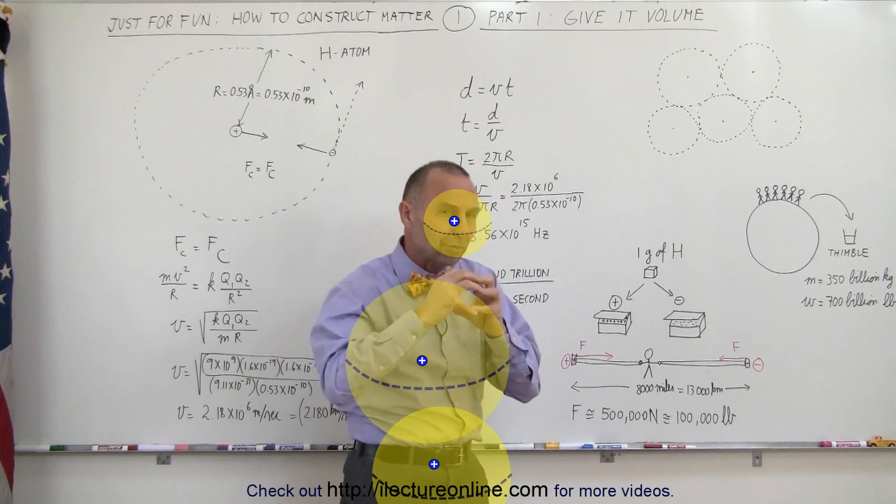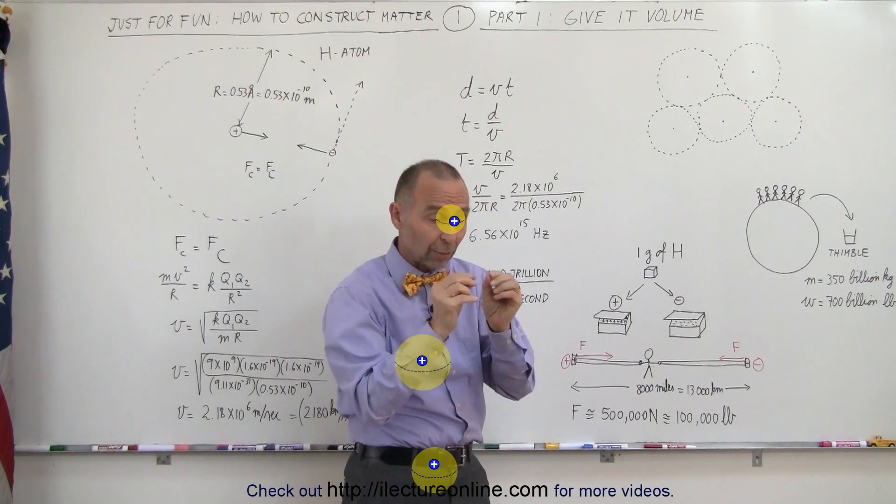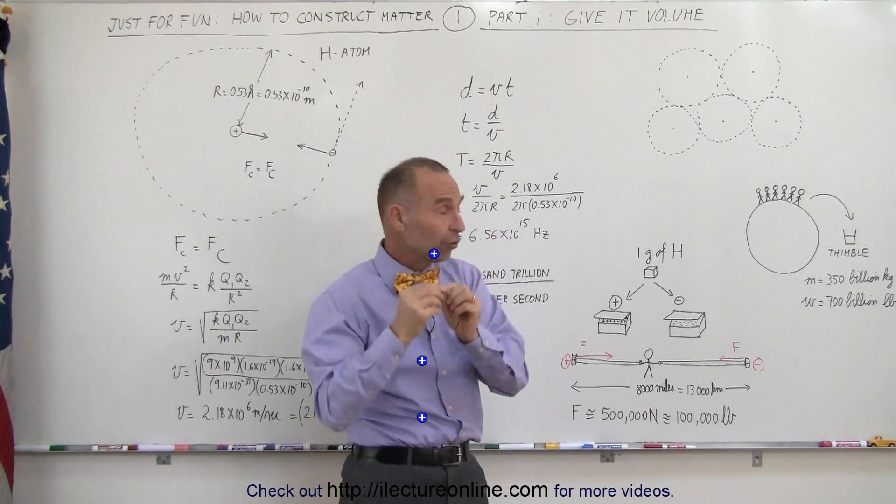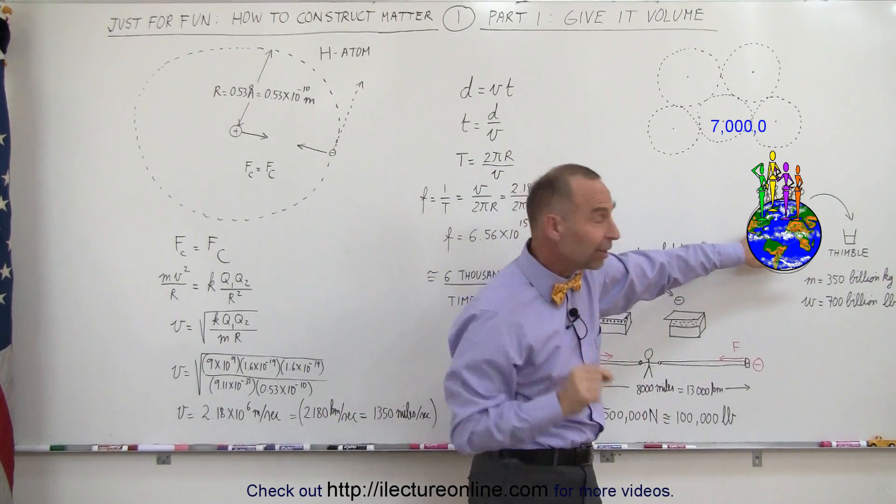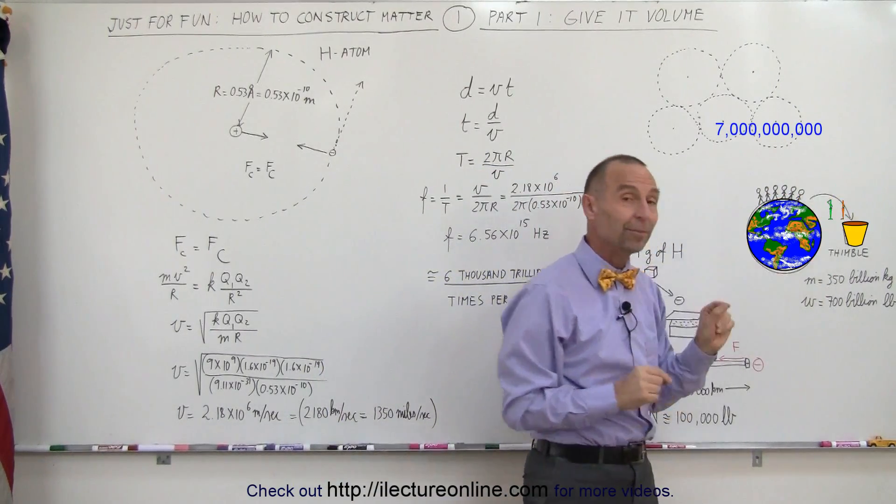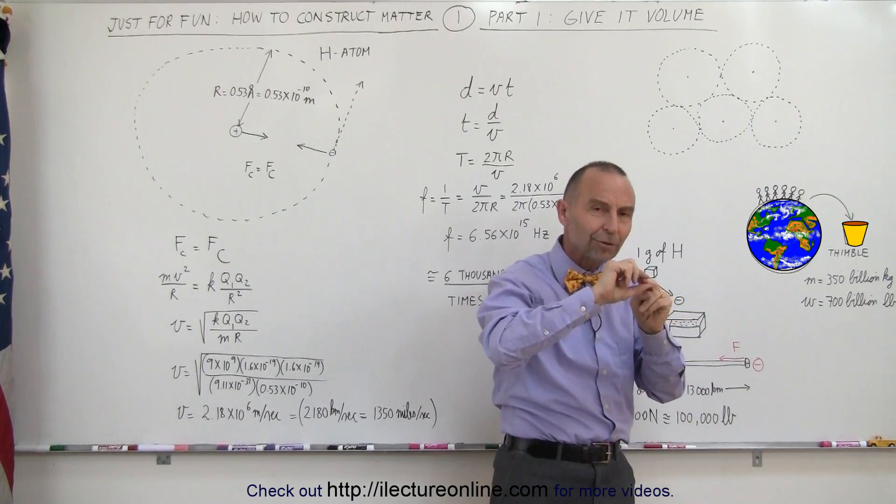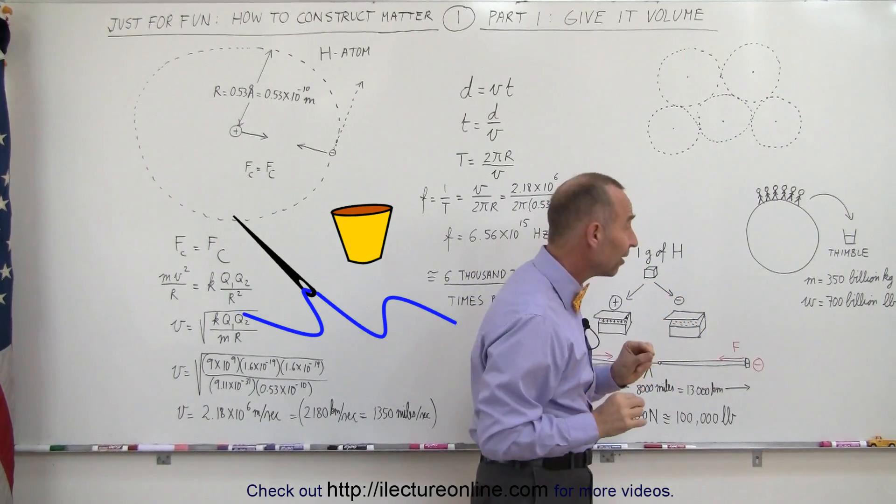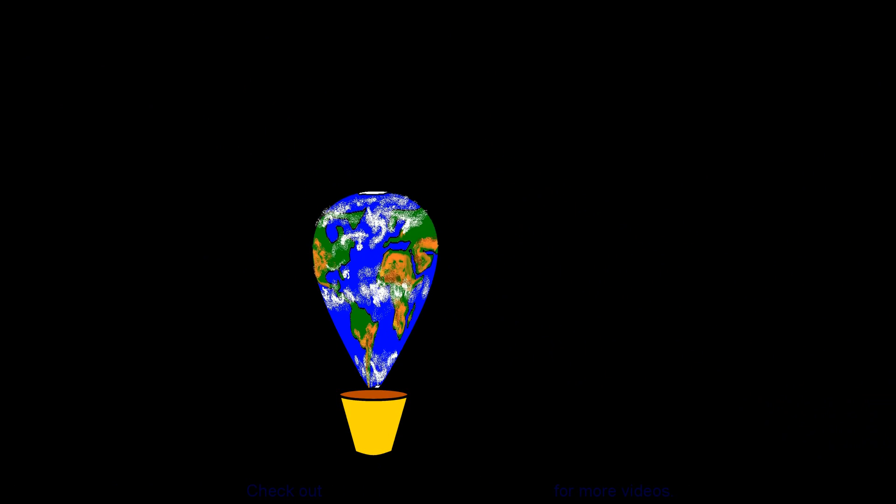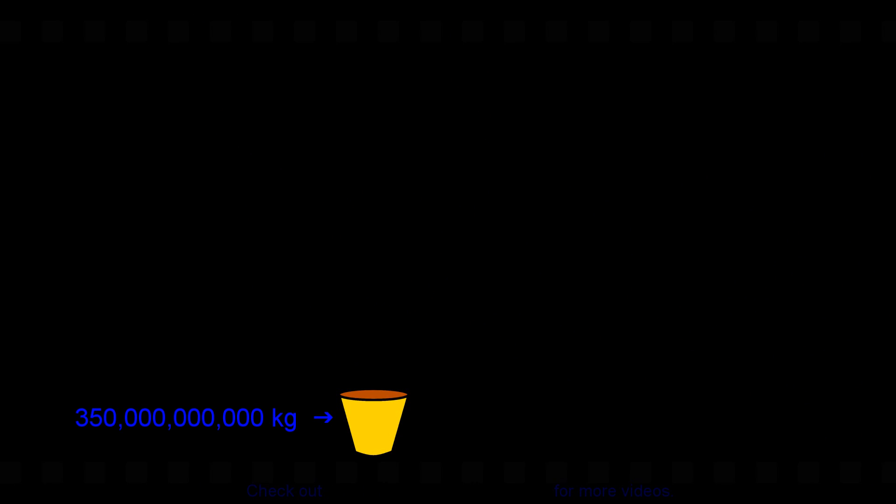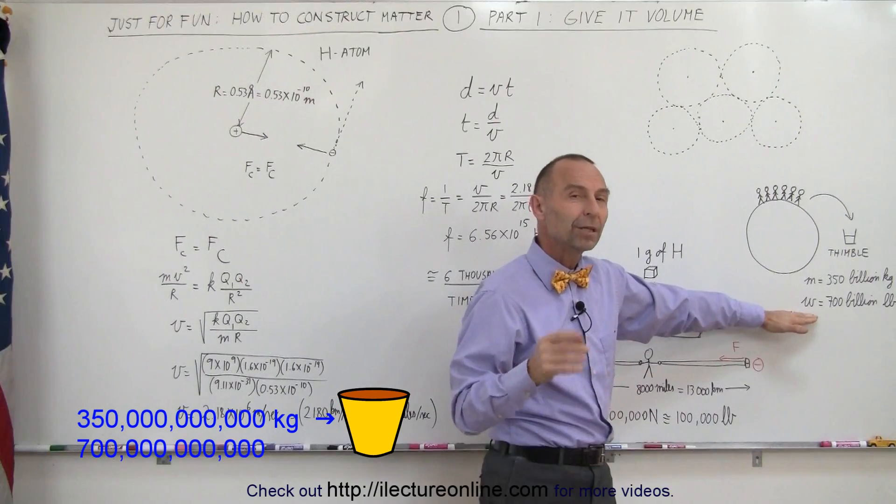If you were able to squeeze all that space from between odd atoms together so that we have bodies made up of nucleus against nucleus, the entire world population, all 7 billion of us, could fit into a single thimble. Those are those little things that you put on your finger so when you sew you don't prick yourself, and that thimble would contain the entire world population with a mass of 350 billion kilograms or a weight of 700 billion pounds.